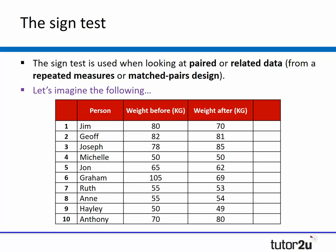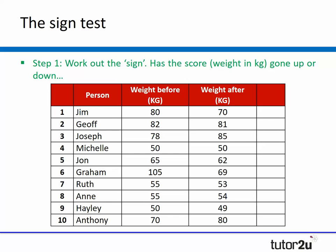The first job for students would be to say has the person gone up or down in weight, and this is where you apply the sign. Step one of the sign test is always just plotting has the score gone up or has it gone down. We can see Jim would be a minus, Jeff would be a minus, I'd be a plus, Michelle stayed the same so we give her a zero, John would be a minus, Graham a minus, Ruth also a minus, Anne a minus, Hayley a minus, and Angie a plus. So the first step is just working out the sign, very simple.